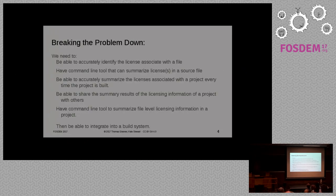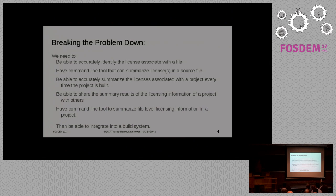We're making some progress now. With any hard problem, you have to start breaking it down. The steps are: we need to accurately identify the license associated with each file. Some developers like to say it's just at the project level, but that's been showing more and more to be a luxury we no longer have. Files move between projects, and tracking things down over time becomes a very manually intensive operation if you're trying to discover the root cause.